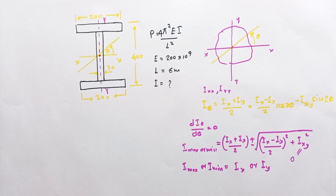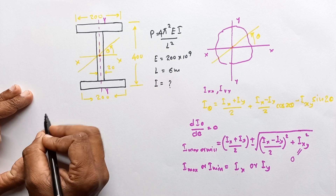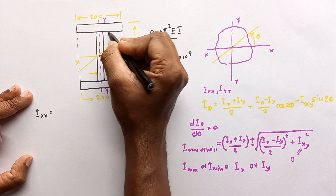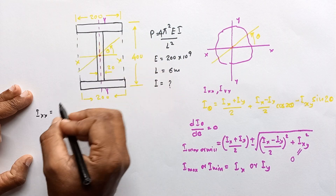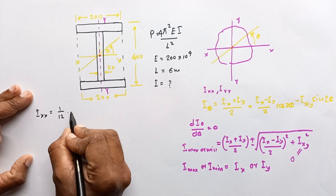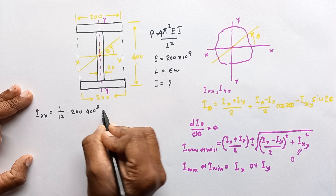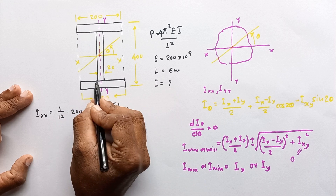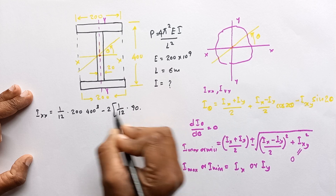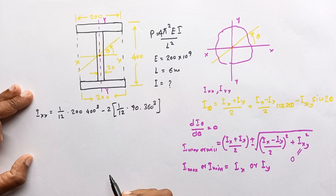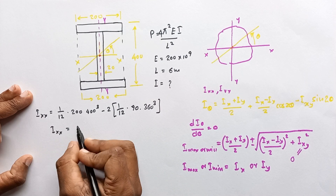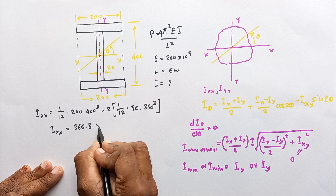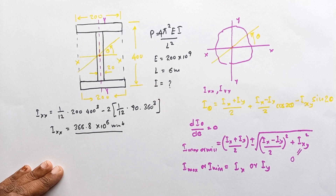Let's calculate I_xx and I_yy. For I_xx, I consider the total rectangular area and subtract the two inner rectangular areas. I_xx = (1/12)(200)(400³) − 2 × (1/12)(90)(360³). This gives I_xx = 366.8 × 10⁶ mm⁴.